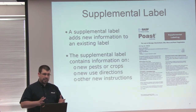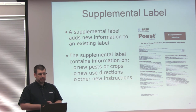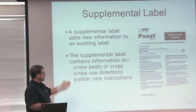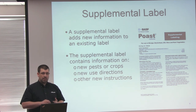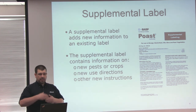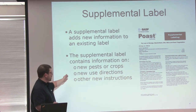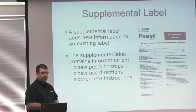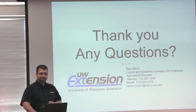The final thing I want to talk about is the supplemental label. Supplemental labels usually come out after the original label has been published. They provide new information to an existing label — the supplemental label may contain new pests or new crops. Sometimes a pesticide might be approved for a new pest that wasn't on the label, and they release the supplemental label to make it complete. There might be new use directions, whether brand new or a modification of existing directions, or other new instructions not included in the previous label. With that, thank you.